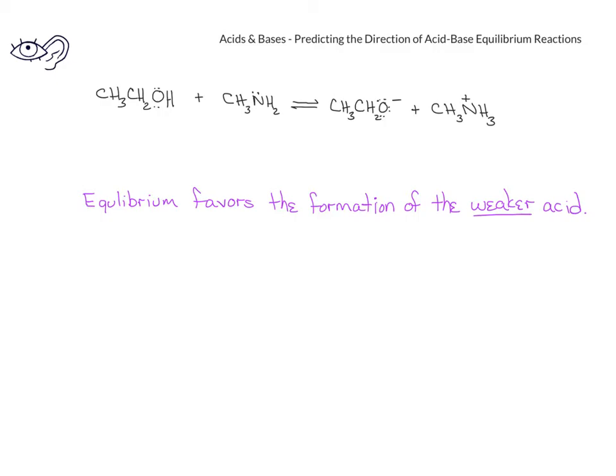In this reaction, we have ethanol reacting with methylamine to produce the ethoxide ion and the methyl ammonium cation. When we compare the pKa's of the two acids, ethanol and methyl ammonium cation, we see that the ethanol has a pKa of about 15, whereas the methyl ammonium cation has a pKa of about 11.